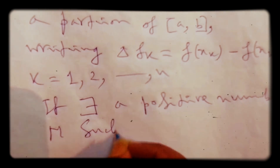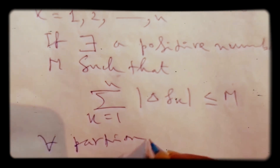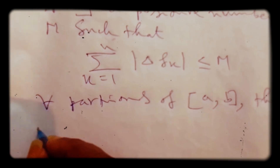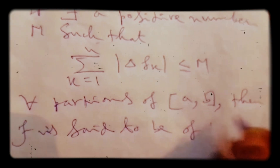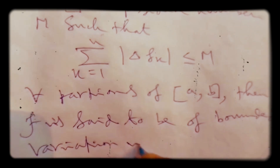If there exists a positive number M such that the summation from k = 1 to n of |delta f_k| is less than or equal to M, for all partitions of [a, b], then f is said to be of bounded variation, abbreviated BV, on the interval [a, b].